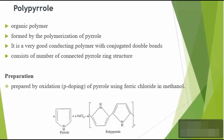Next is polypyrrole. It is an organic polymer formed by the polymerization of pyrrole. Polypyrrole is prepared by a process called P-doping, which is an oxidation process. The P-dopant used here is ferric chloride. So it is prepared by treating polypyrrole with ferric chloride as the dopant. The product formed is conducting polypyrrole.